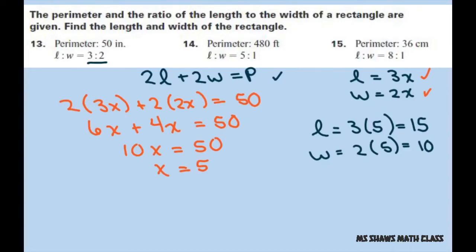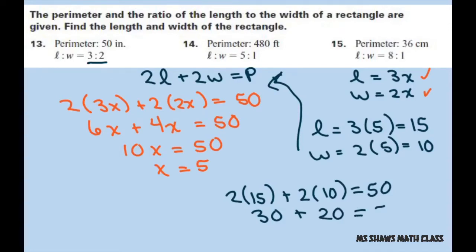If you want to check, you can plug it back into your formula. So you have 2 times 15 plus 2 times 10 should equal 50. That would be 30 plus 20 equals 50, which checks out.